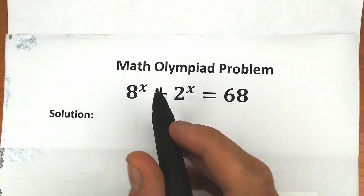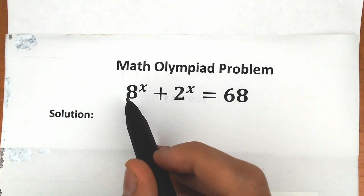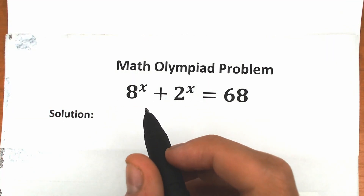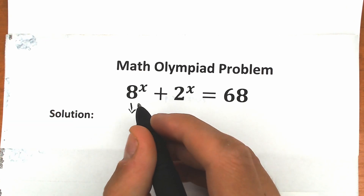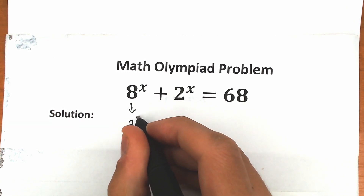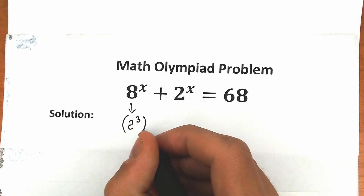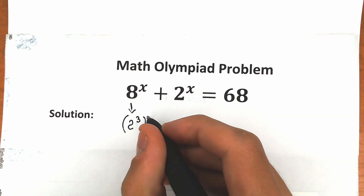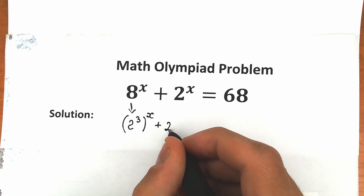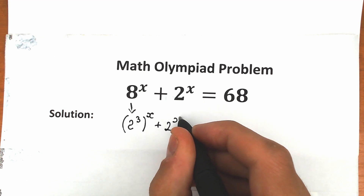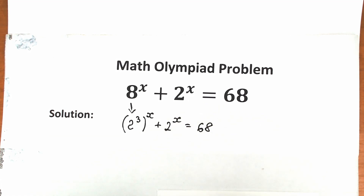First of all, let's create the same basis on the left-hand side, because we have 8 and 2. If we write 8 as 2 cubed — since 2 times 2 times 2 equals 8 — and raise all of this to the power x, we still have plus 2 to the x, equal to 68. This is our first step.